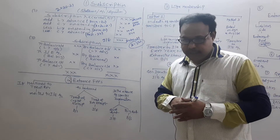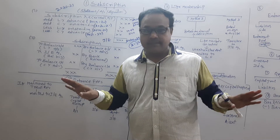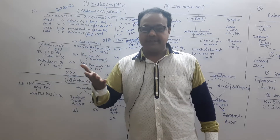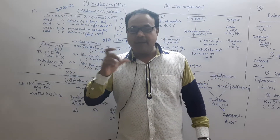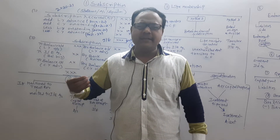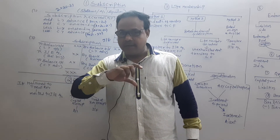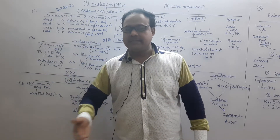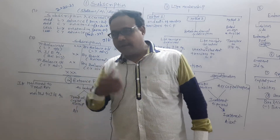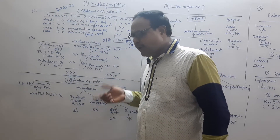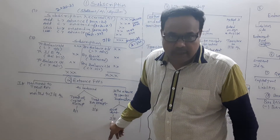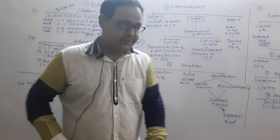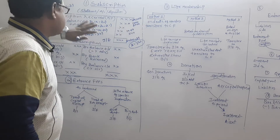In the absence of specific information about entrance fees, use judgment. If it is a small amount compared to other revenue receipts like donations, treat it as income in the income and expenditure account. If it is a big amount, treat it as a capital receipt and show it in the balance sheet.